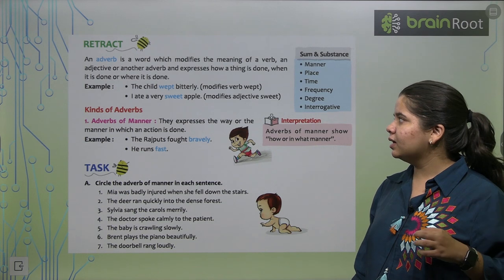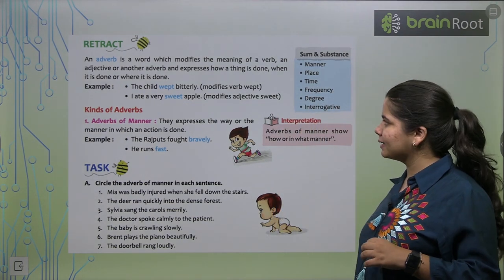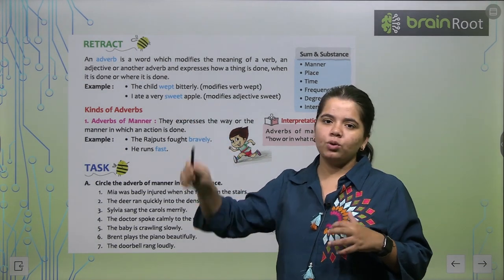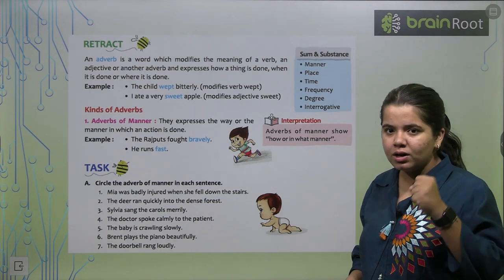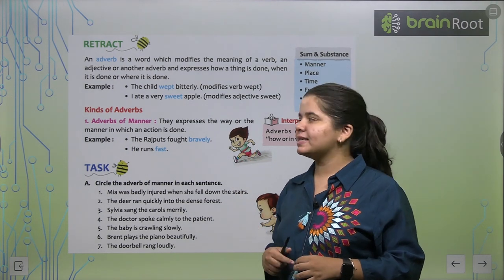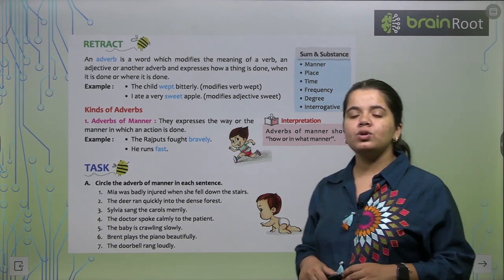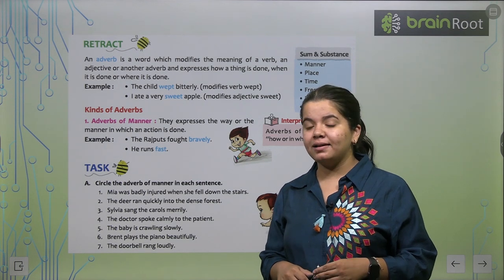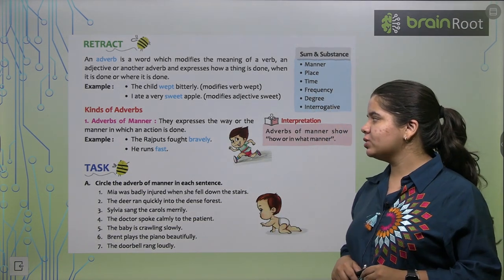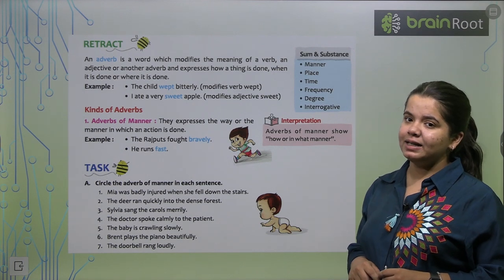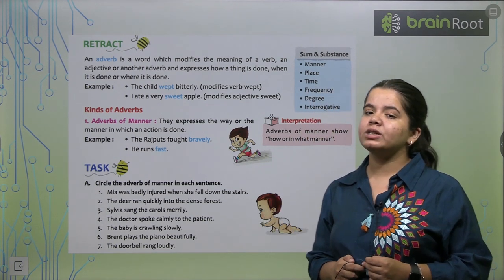Let's see. The child wept bitterly. I ate a very sweet apple. You can see that the word wept bitterly is modified. We call it Adverb of manner. The Rajputs fought bravely. Bravely is our adverb. He runs fast. Fast is our adverb. Why? Because it is the way she runs.